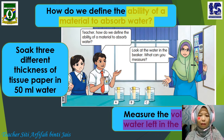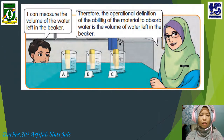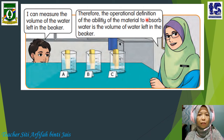The purple colour represents the thing that can be observed or measured. I can measure the volume of water left in the beaker. Therefore, the operational definition of the ability of a material to absorb water is the volume of water left in the beaker.